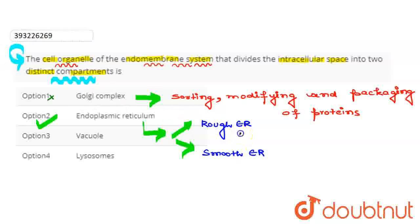Rough endoplasmic reticulum involved होते हैं in protein synthesis, और smooth endoplasmic reticulum involved होते हैं in lipid synthesis.